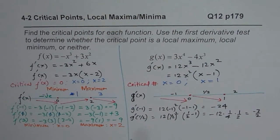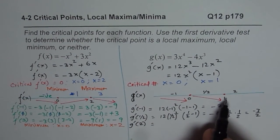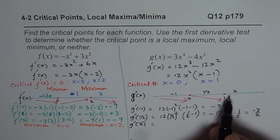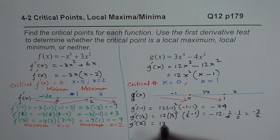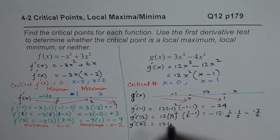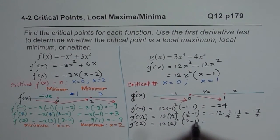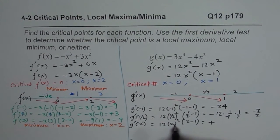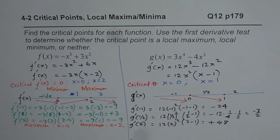Taking test point 2, for the interval from 1 to infinity: the derivative at 2 is 12 times 2 squared times (2 minus 1), which is 12 times 4 times 1, giving positive 48. Positive means the function is increasing beyond x equals 1.